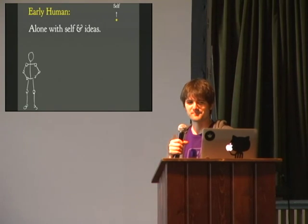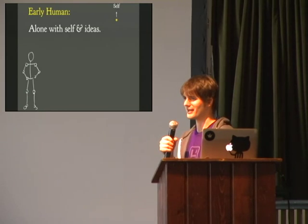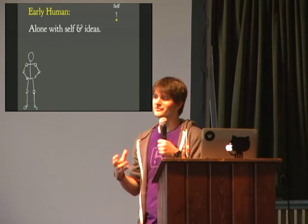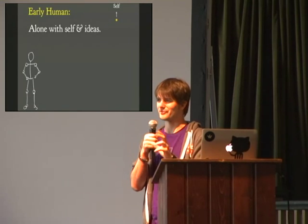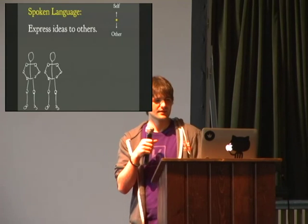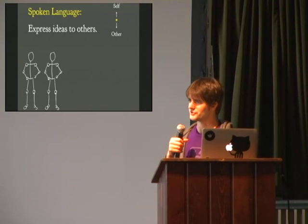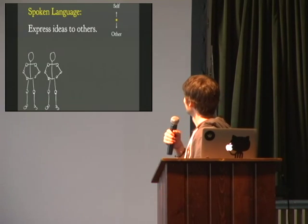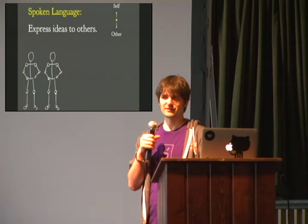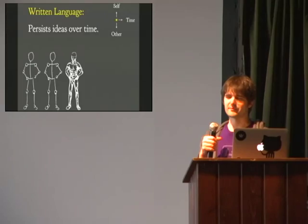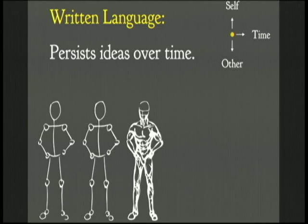A little bit of a history lesson in my view of the way language works. Basically, with early humans, before we could verbally talk to each other, we were just kind of alone — our mental landscape was just comprised of ourselves. Eventually we started developing spoken language, which was very key for us — this kind of separates us from a lot of other animals, and allows us to express our ideas. Then we developed written language, which allows us to persist our ideas over time, and this is basically what documentation is.